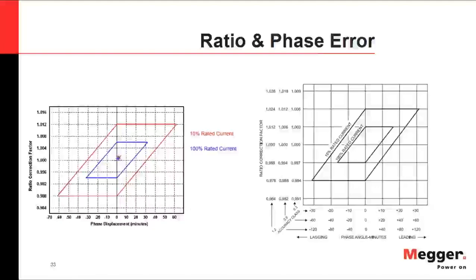One advantage from IEEE is the provision of parallelograms, allowing you to plot both the magnitude value and the phase deviation angle on a graph. You can visually confirm that at 100% rated current and at 10% rated current your transformer complies with the standard, analyzing results against the specification for both phase deviation values and magnitude.